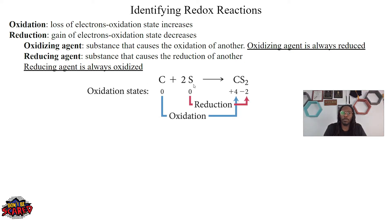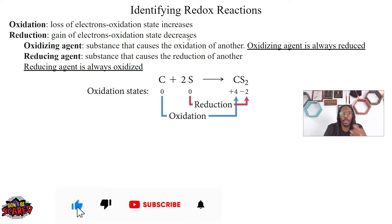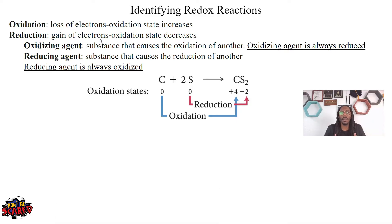Looking at sulfur, we go from zero to negative two. Going from zero to negative means our oxidation state decreased. And if our oxidation state decreases, we're gaining electrons. And if we gain electrons, we are being reduced. So sulfur is being reduced here.